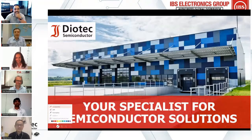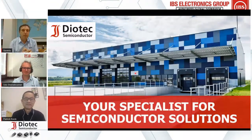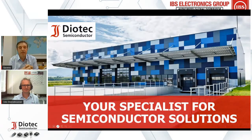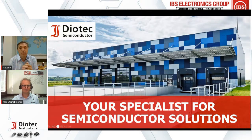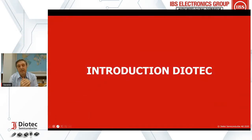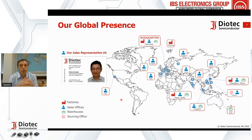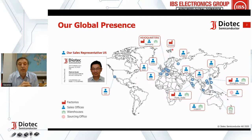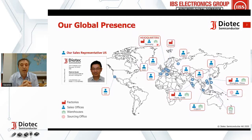Thank you, Rob. Let's start with a brief introduction about DioTec. DioTec is a company with 74 years of history in semiconductors, and our ambition is to be your specialist for semiconductor solutions. We have four facilities worldwide: in Germany, Slovenia, China, and India. Our headquarters is in Europe, in Germany, and in all our factories we are assembling our products — front end and back end — which is very important to control all the processes of production.